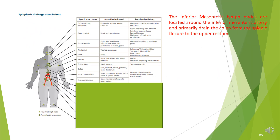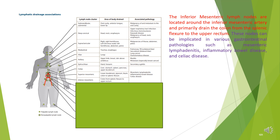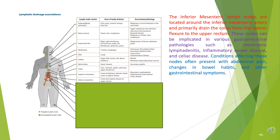The inferior mesenteric lymph nodes are located around the inferior mesenteric artery and primarily drain the colon from the splenic flexure to the upper rectum. These nodes can be implicated in gastrointestinal pathologies such as mesenteric lymphadenitis, inflammatory bowel disease, and celiac disease, often presenting with abdominal pain and changes in bowel habits.